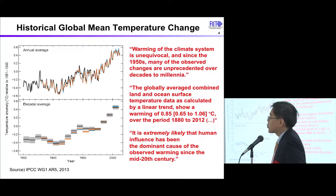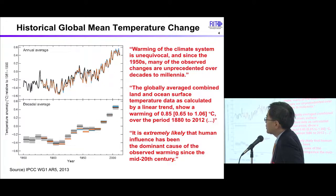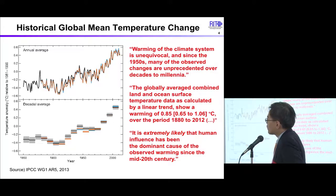This figure shows the historical global mean temperature change. IPCC also says warming of the climate system is unequivocal, and since the 1950s many of the observed changes are unprecedented over decades to millennia. The global average combined land and ocean surface temperature data show a warming of 0.85 degrees Celsius over the period of 1880 to 2012. It is extremely likely that human interference has been the dominant cause of observed warming since the mid-20th century.